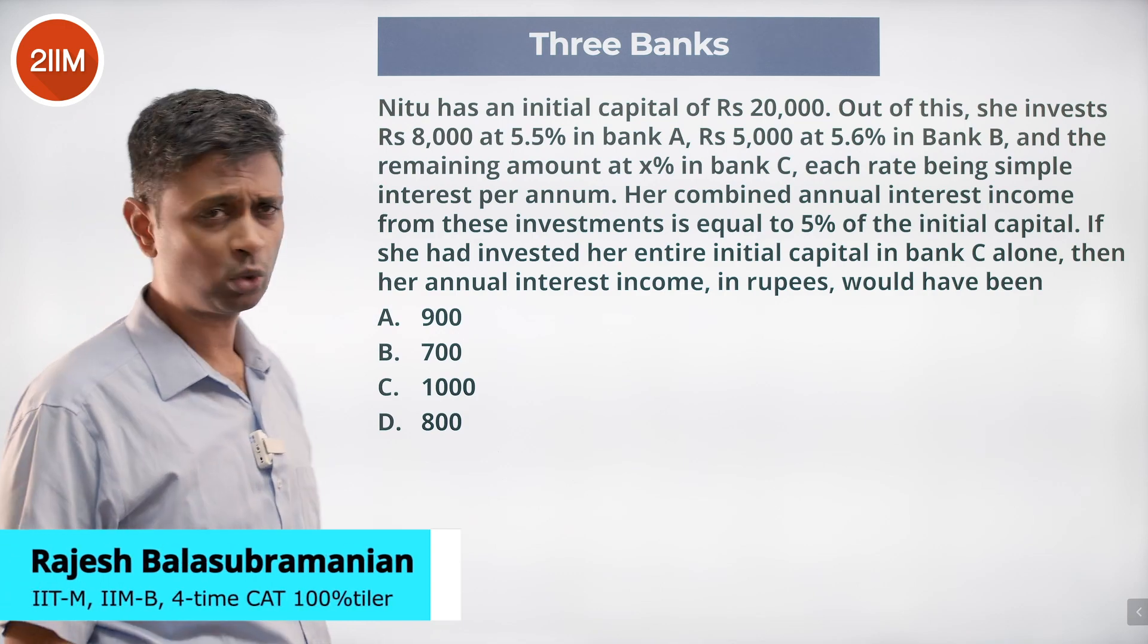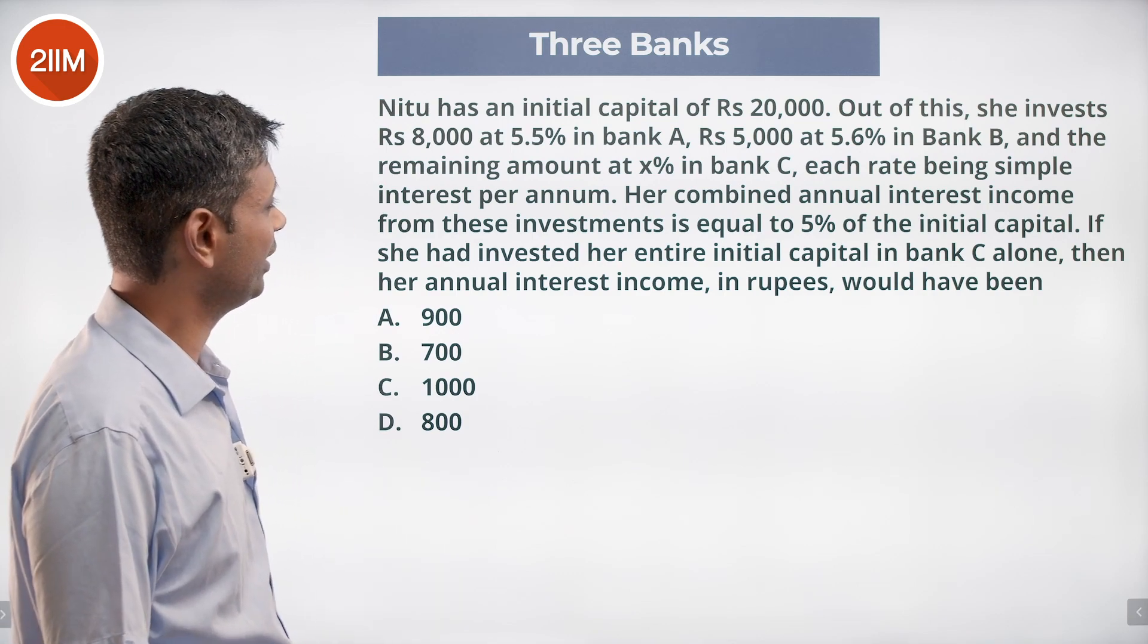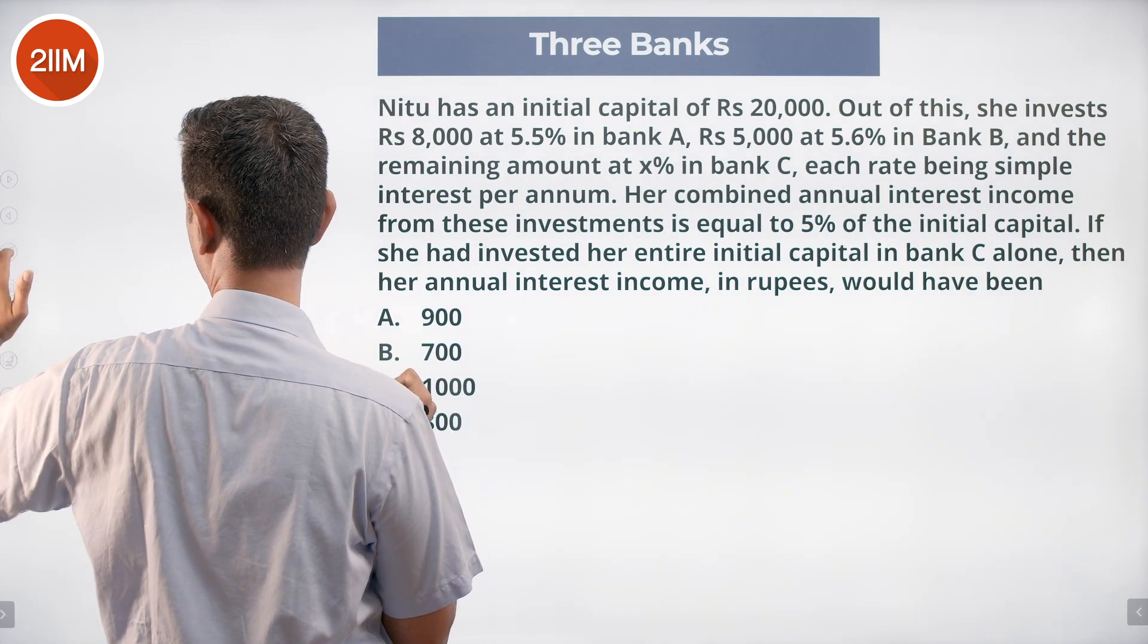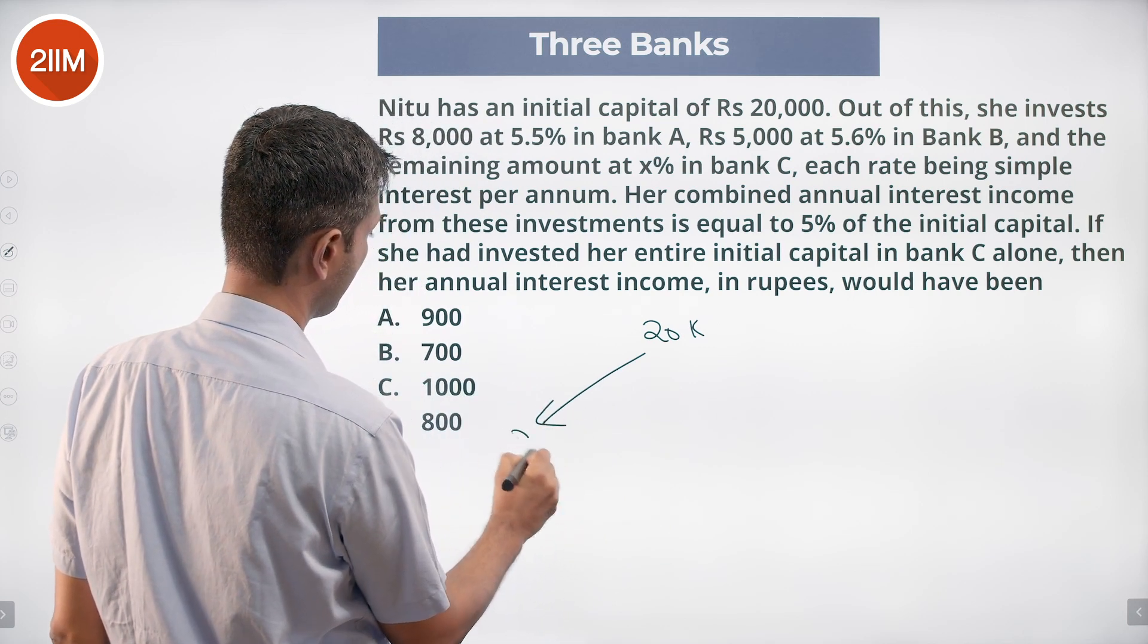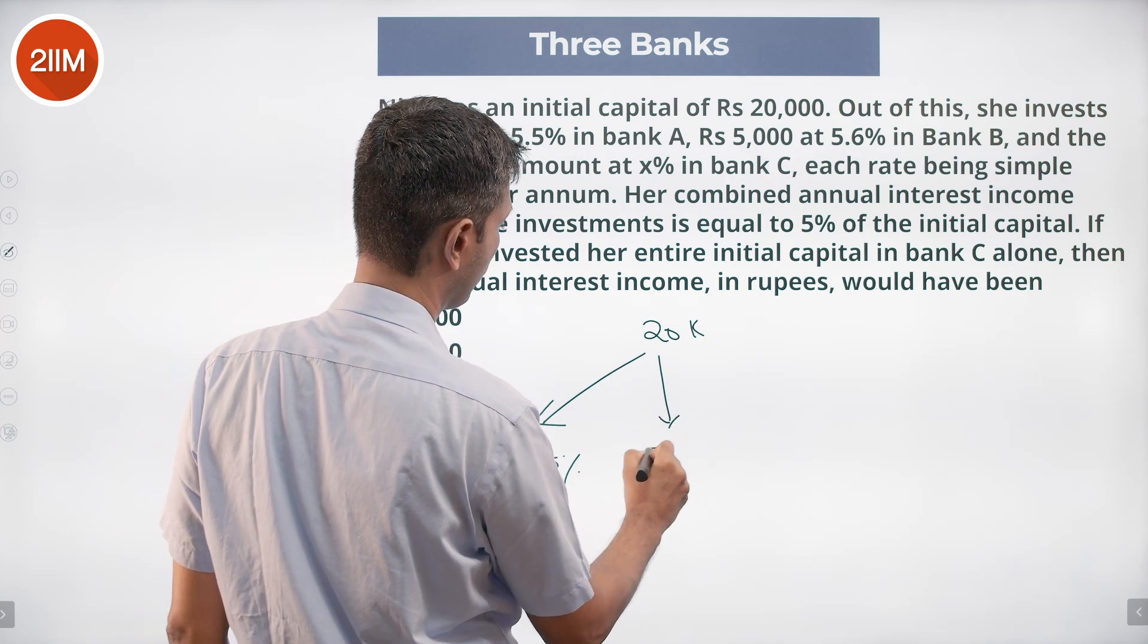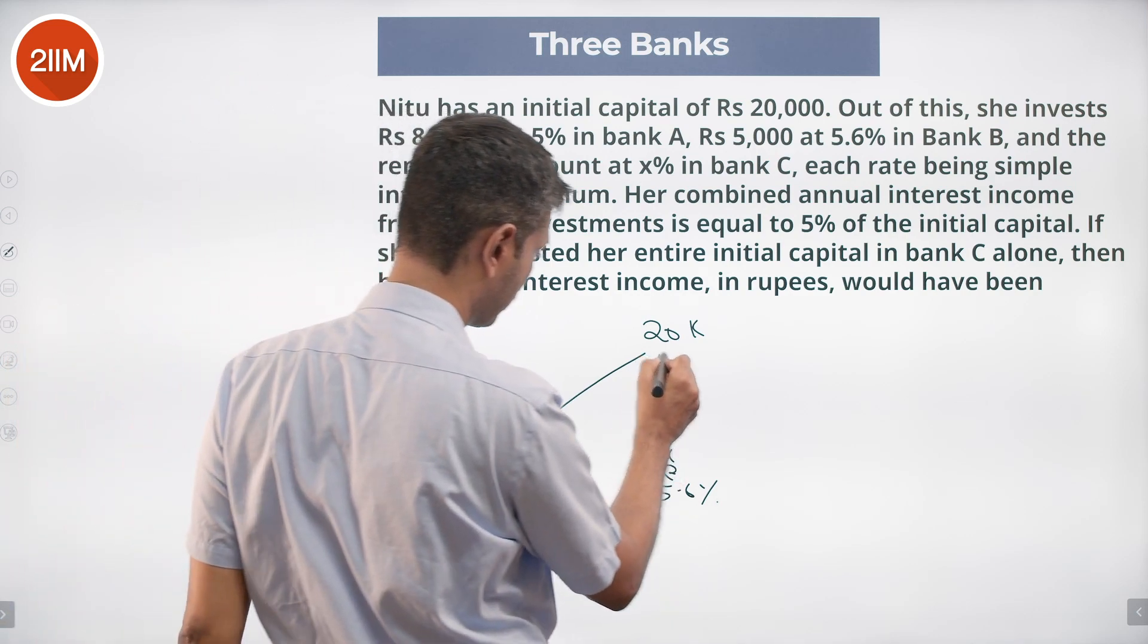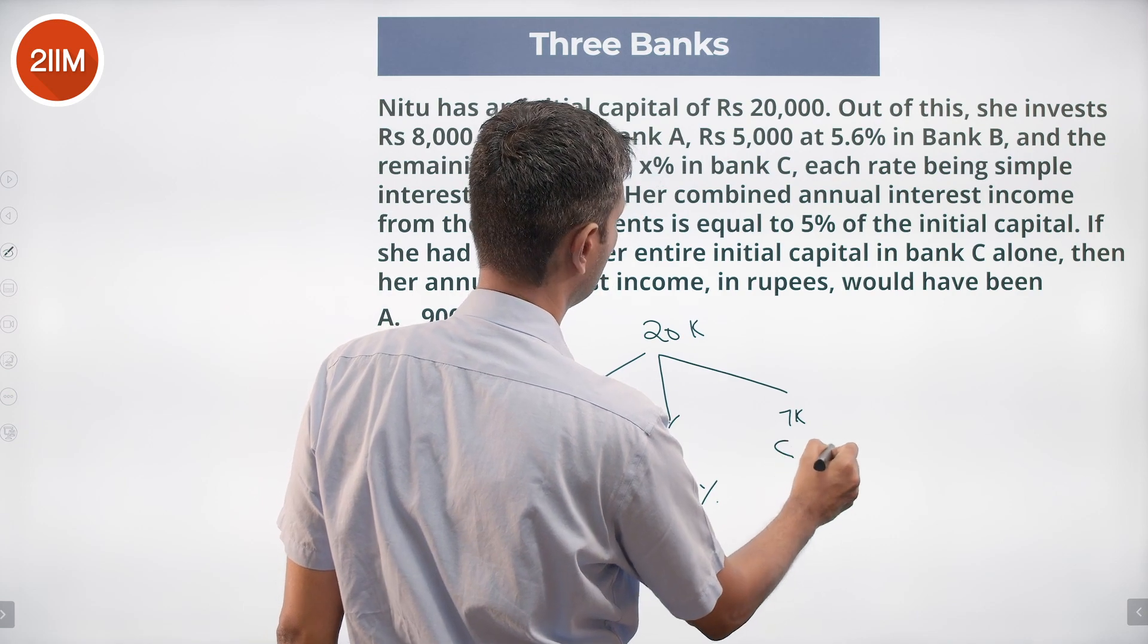Nitu has an initial capital of 20,000. Out of this she invests 8,000 at 5.5% in bank A, 5,000 at 5.6% in bank B. The remaining amount, 8 plus 5 is 13, so 7K at bank C at X percent.